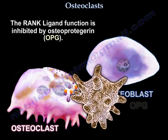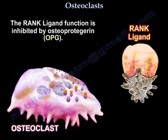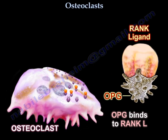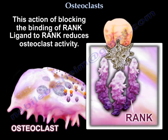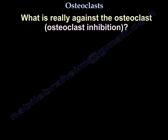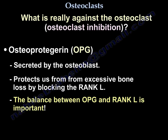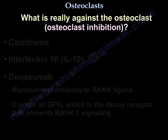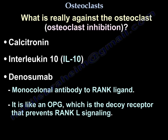The RANK ligand function is inhibited by OPG (osteoprotegerin). OPG protects us from excessive bone loss by blocking RANK-L. The balance between them is important. Calcitonin, IL-10, and the drug denosumab — a monoclonal antibody to RANK ligand — act similarly to OPG, which is a decoy receptor that prevents RANK-L signaling.